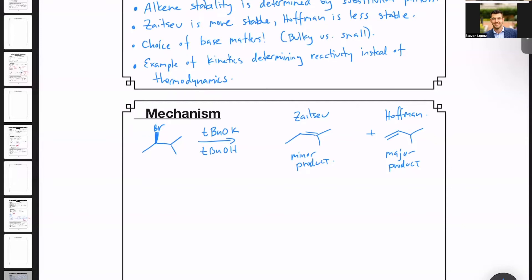And usually it is. But if the base is too large, this can lead to the Hoffman product being favored, as we've shown in this reaction.